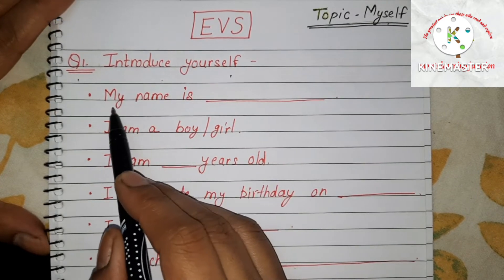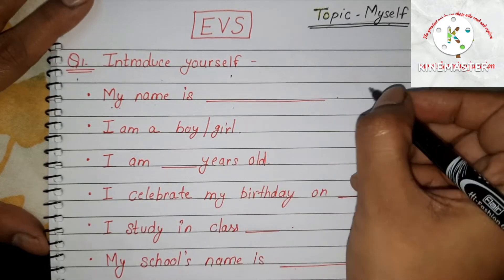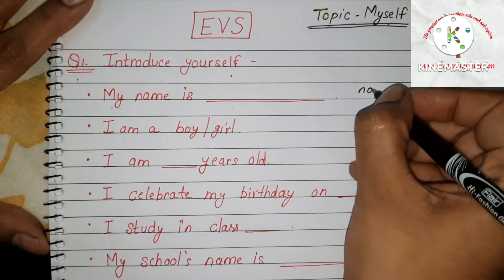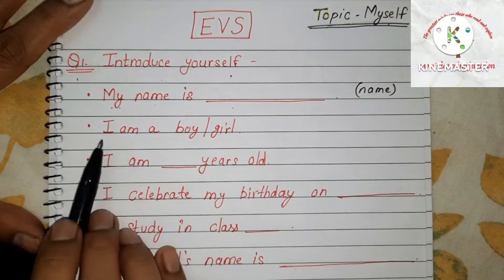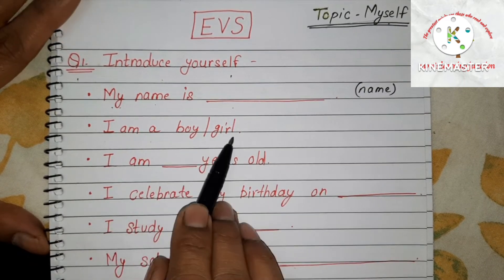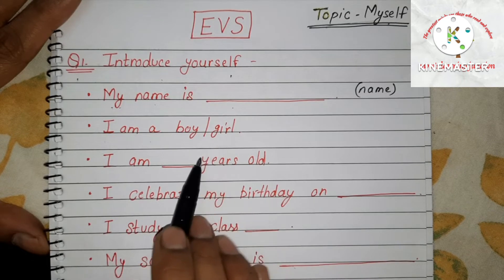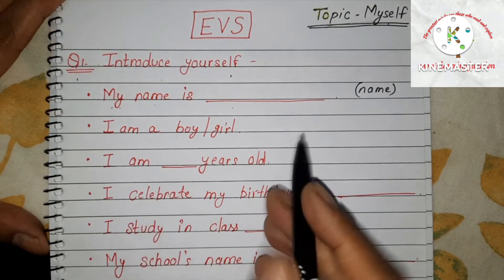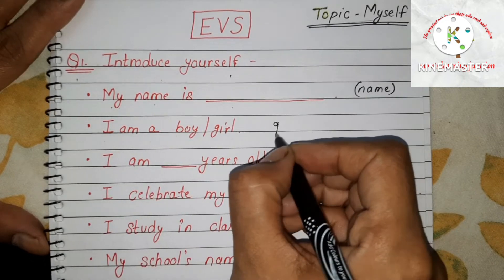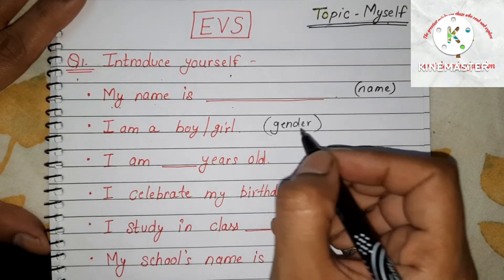The first field is 'My name is,' where the child has to write his or her name. Next is 'I am a boy/girl,' where the child has to tick mark the option which he or she is, mentioning their gender.